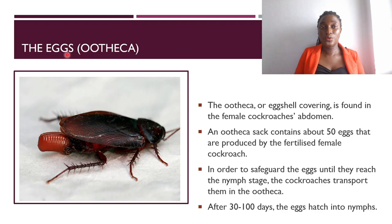Taking a look at the various stages in the life cycle, the first one is the eggs. Mostly the eggs are laid in an egg case known as the ootheca. Here you see the abdominal region of the adult housing and subsequently releasing the egg case, which is the ootheca.